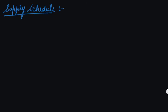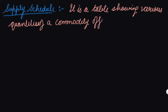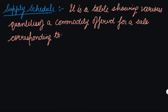In this video we will be starting the supply schedule. Same as the demand schedule, in the demand schedule we are given the price and the quantity demanded. In the supply schedule we will be having price and quantity supplied. A supply schedule is a table showing various quantities of a commodity offered for sale corresponding to different possible prices of that commodity.